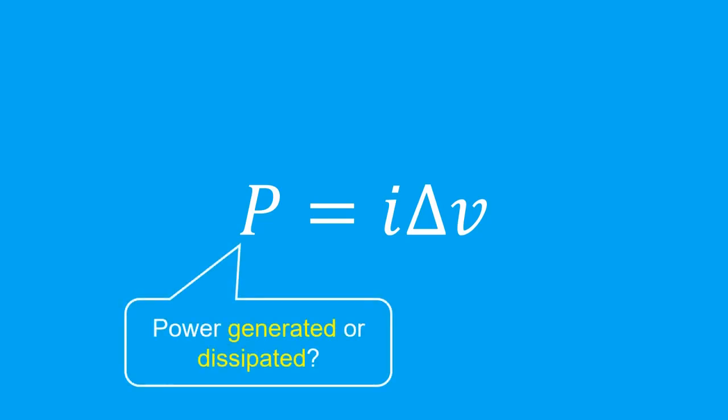An important question to ask is, how can we tell if power is being generated or dissipated by a device? Again, sign conventions will be helpful here.